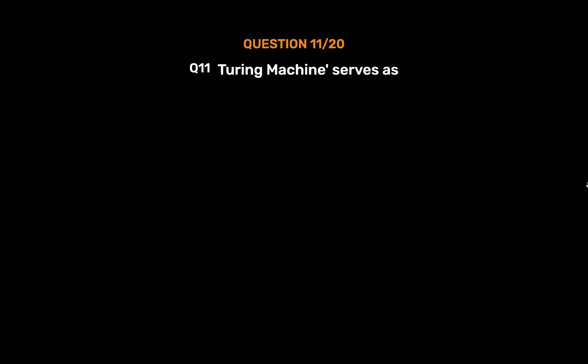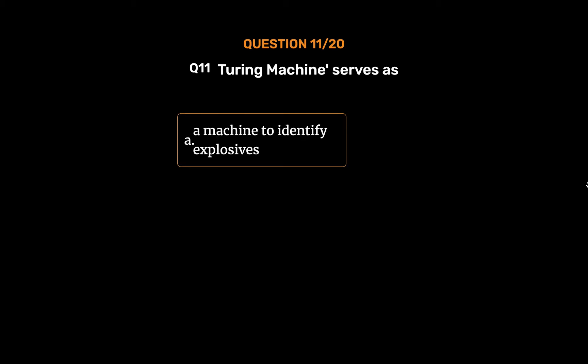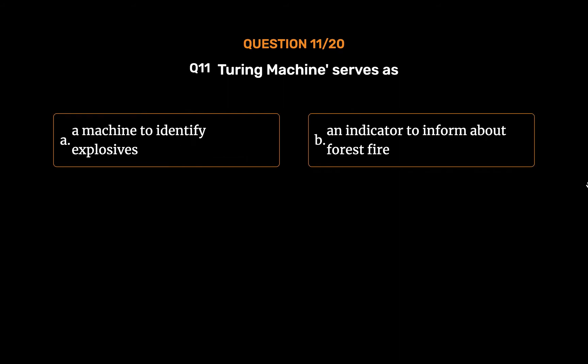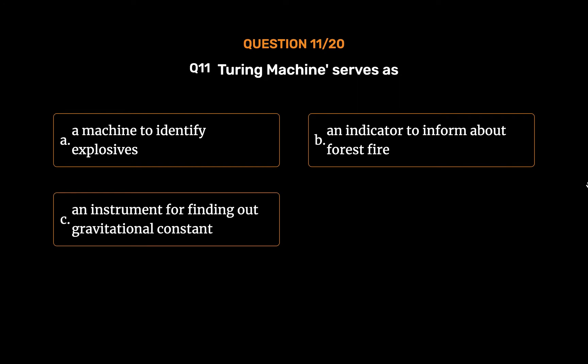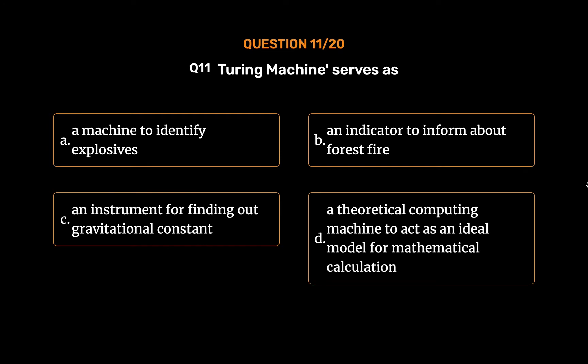Question No. 11: Turing machine serves as: Option A, A machine to identify explosives; Option B, An indicator to inform about forest fire; Option C, An instrument for finding out gravitational constant; Option D, A theoretical computing machine to act as an ideal model for mathematical calculation. The correct answer is Option D, a theoretical computing machine to act as an ideal model for mathematical calculation.